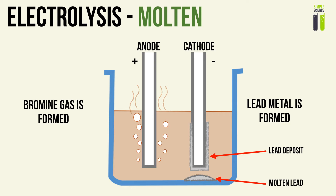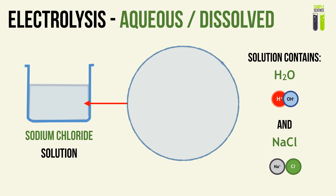In this video, we're going to look at the other example of electrolysis we will be interested in for IGCSE chemistry revision. That is the electrolysis of aqueous solutions, or when ionic compounds are dissolved in a solvent, usually water, resulting in an aqueous solution containing usually four different ions. Two of which make up water — the H+ and the OH- ion — and the other two make up the ionic compound.